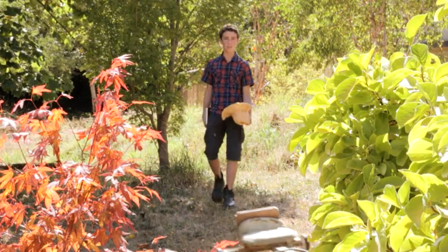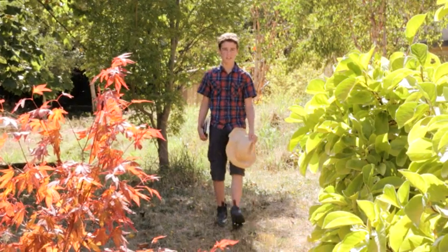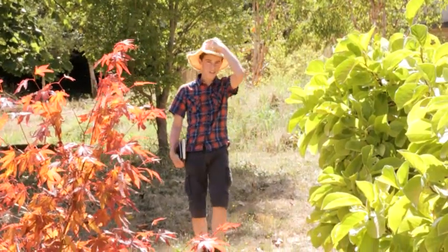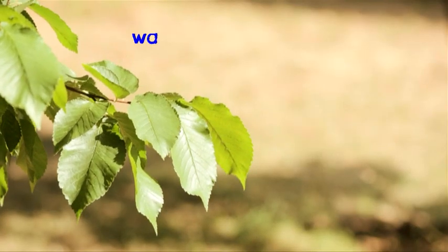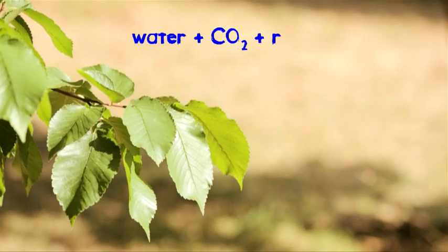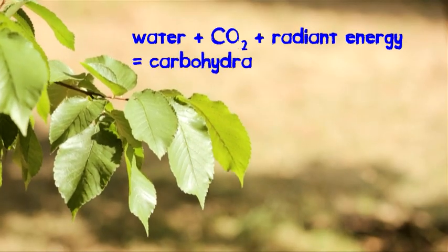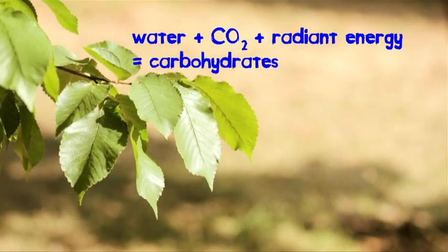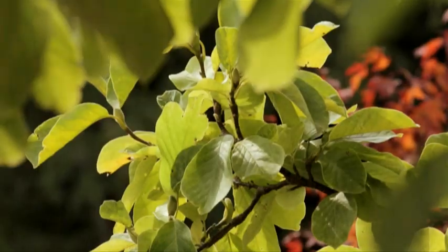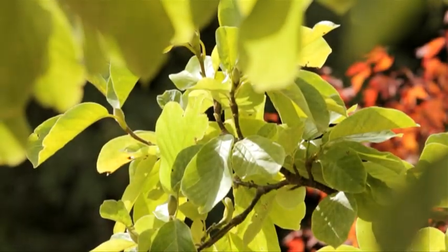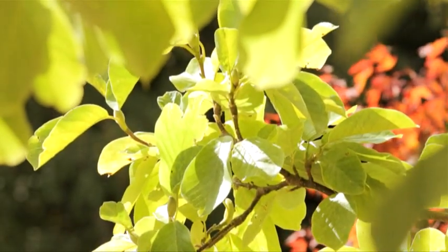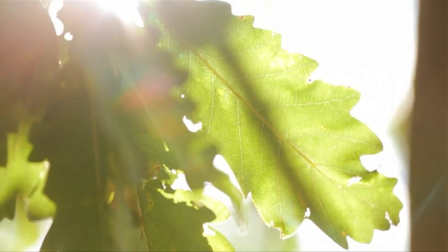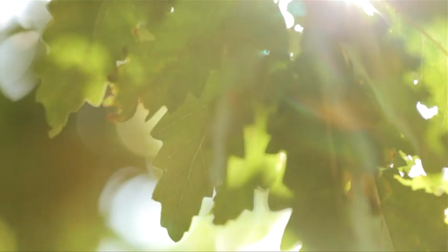The most important type of energy for life on this planet is solar radiation. Green plants use the sun's radiant energy to convert water and carbon dioxide into carbohydrates. In this way, plants are responsible for making all the food on Earth — the source of energy for all animals.